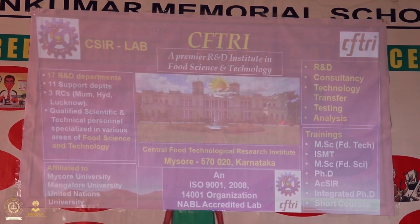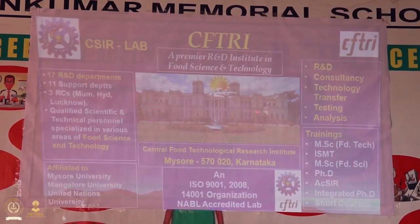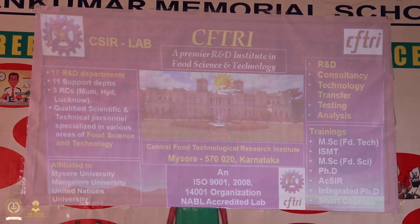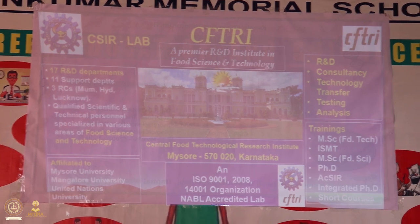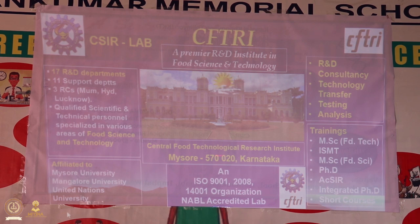At CFTRI we have 4,600 scientists throughout the country. This big building — this is the palace. The Maharaja of Mysore donated this palace to CFTRI for food science and technology. We have ISO quality parameters and training. For MSc Food Technology, I was selected — only one from the whole northeast. I was lucky, I got selected here and I joined.